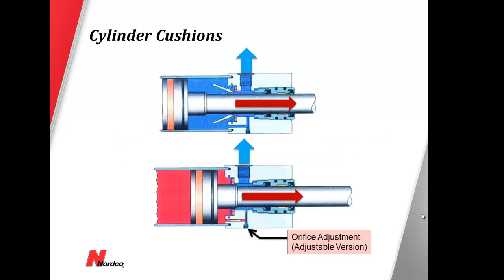Example of built-in cylinder cushions. As the cylinder nears end of stroke, oil gets diverted through designated ports to slow down the cylinder and provide a controlled stop.